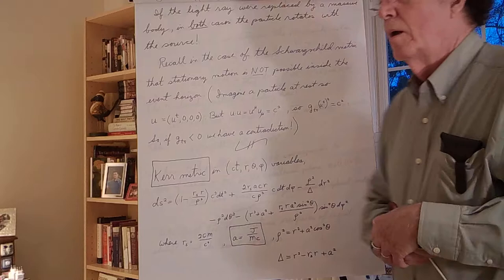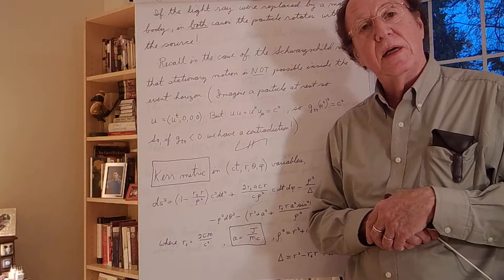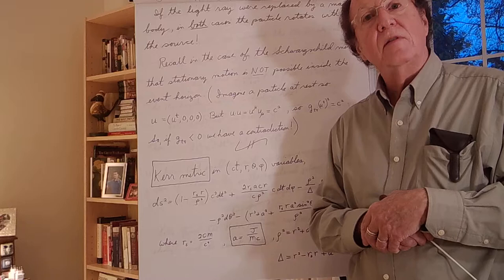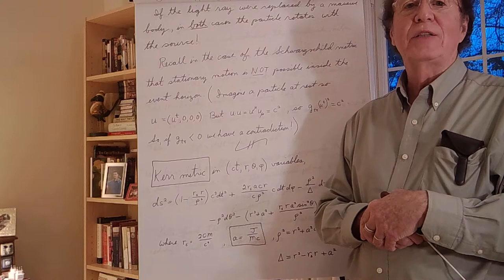We've now been warmed up to the remarkable features of rotating stars and the metric around them. Next time we'll take a look at the exact solution — the Kerr metric — and discuss rotating stars, including the situation where a star might have collapsed inside the event horizons of the Kerr metric to form a rotating black hole.